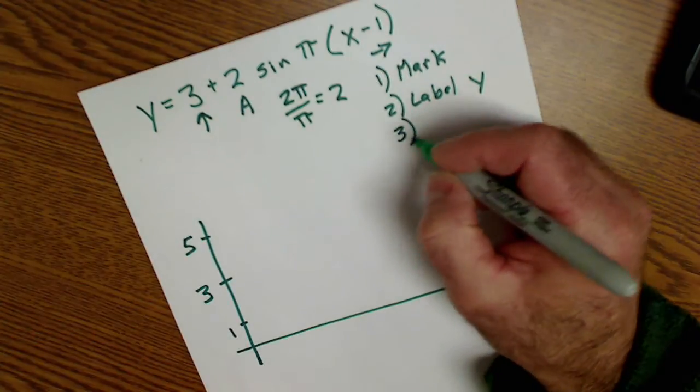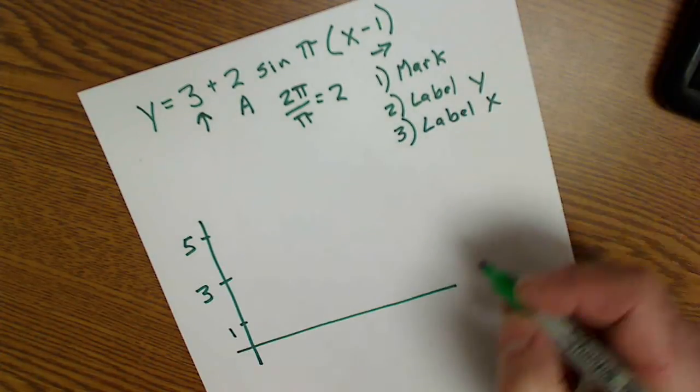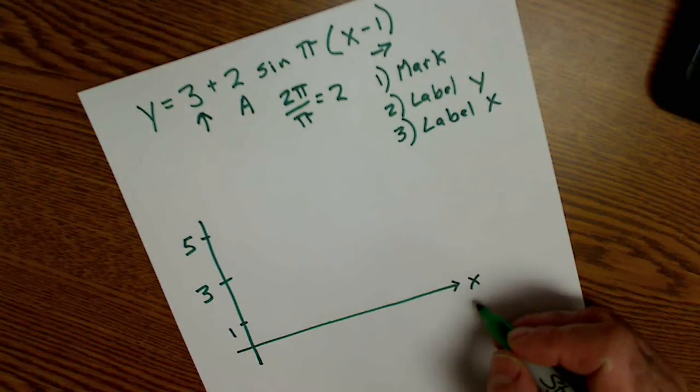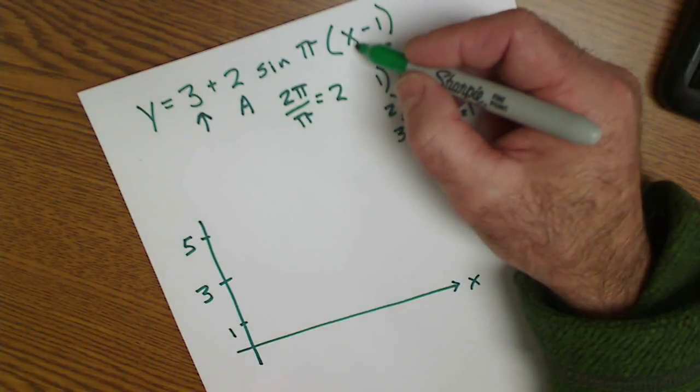Step three is label my x-axis. This is not theta anymore, this is x because I'm in radians. x tells you radians, theta is degrees.